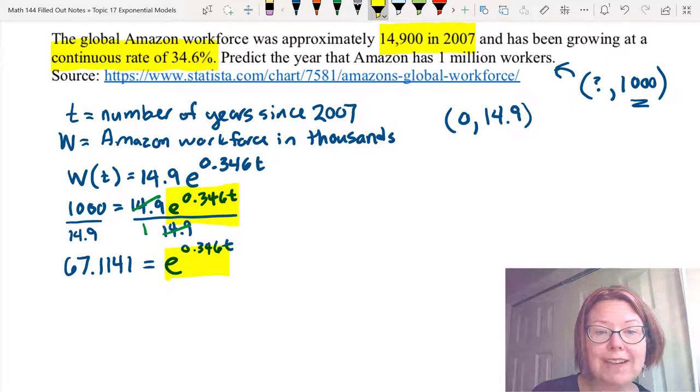Well, now we have that exponential part isolated. And so we can go ahead and take a natural log on both sides because my base is e and the inverse of that is natural log.